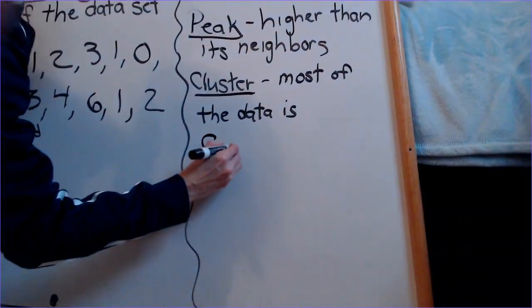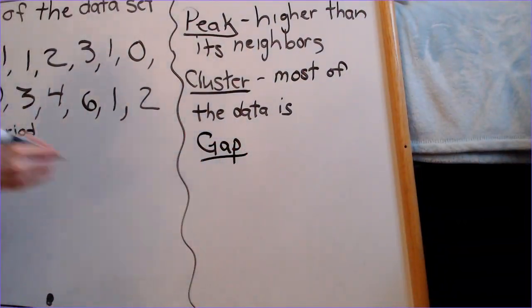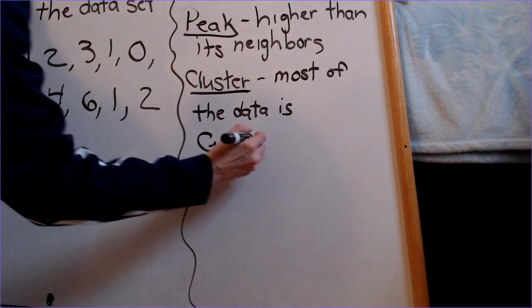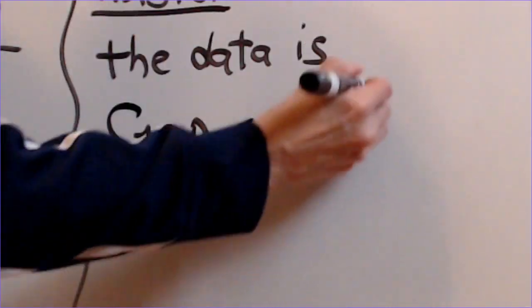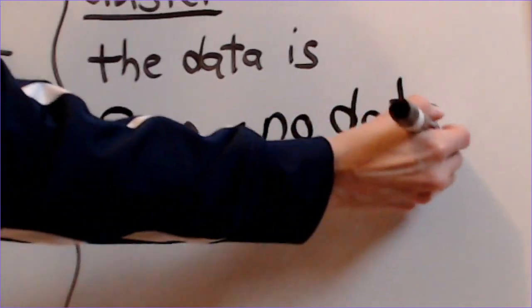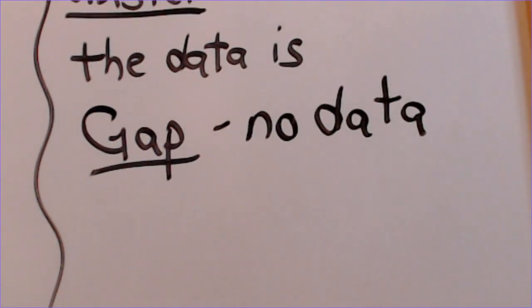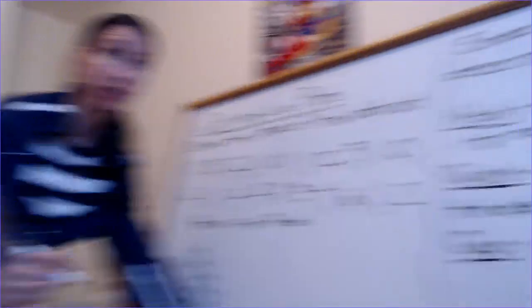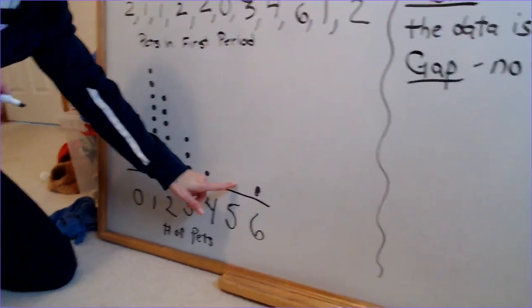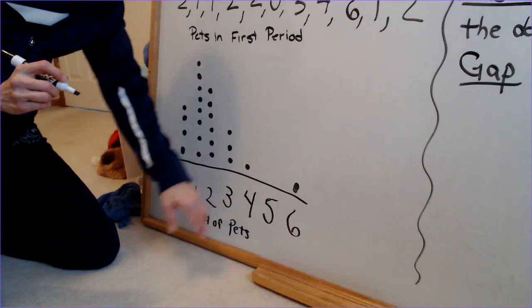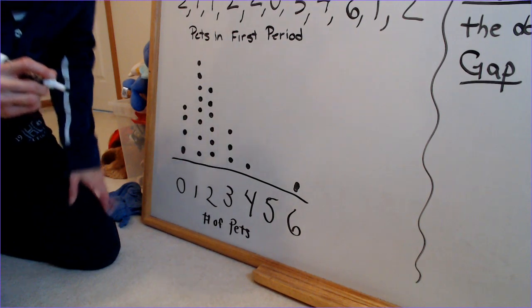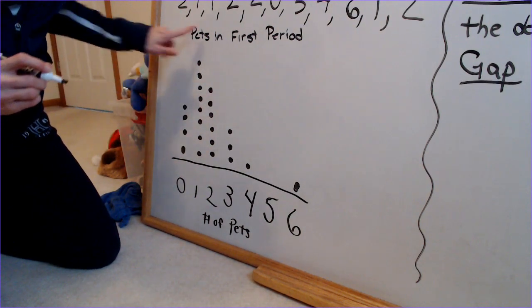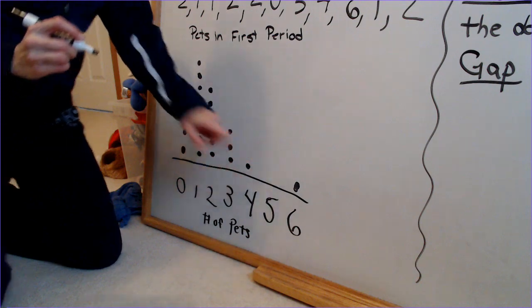Our third shape descriptor is called a gap — pretty self-explanatory, that's where there are no dots, or where there's no data. We have a gap at number five — there's no data at five. So we've got our peak, our cluster, and our gap.